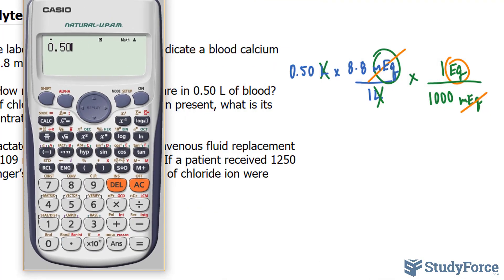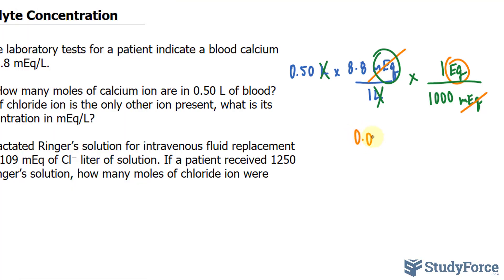First, we'll multiply these out. 0.50 times 8.8 divided by 1,000 gives us the following number. 4.4 times 10 to the power of negative 3. So, 0.0044 equivalent.